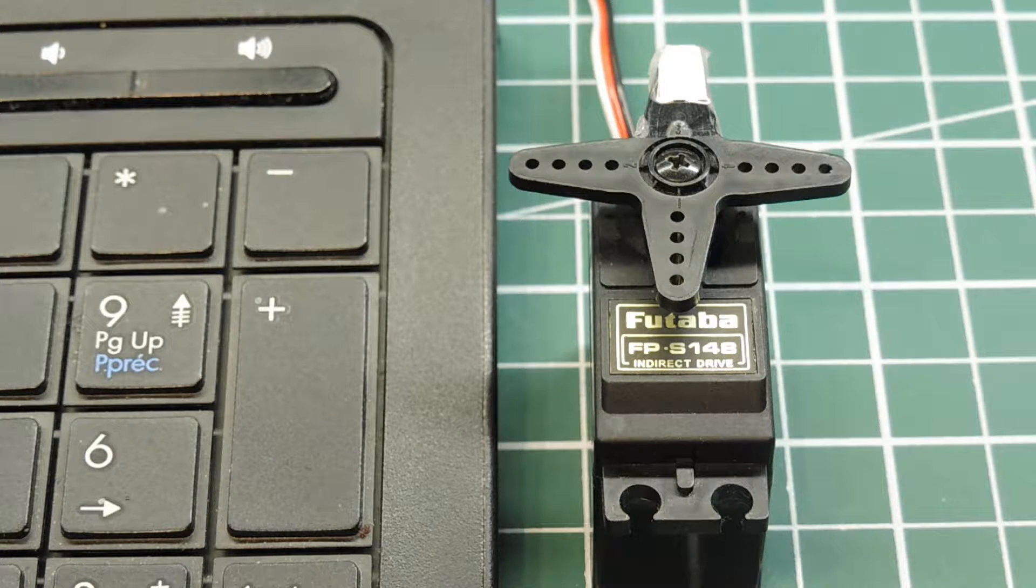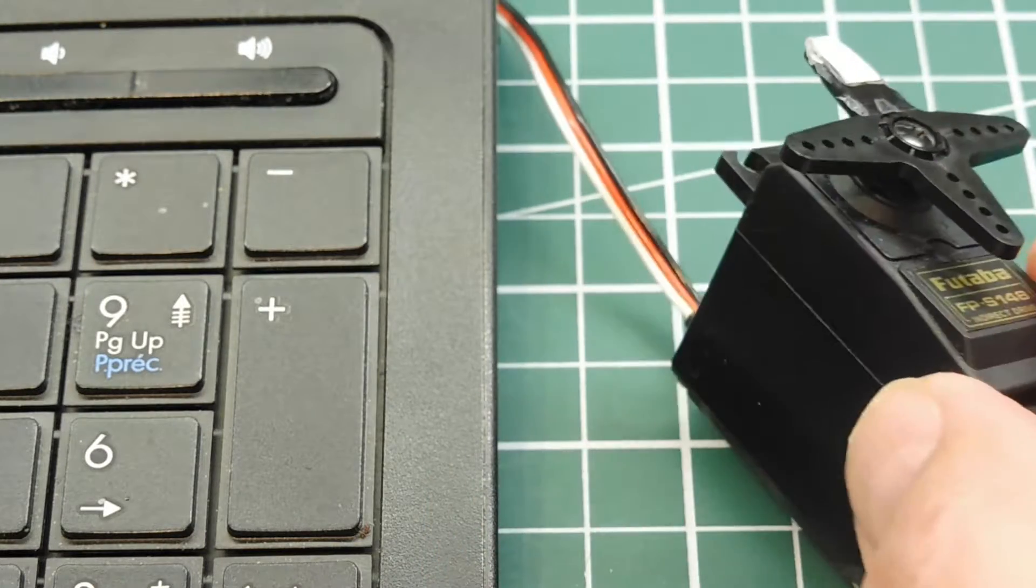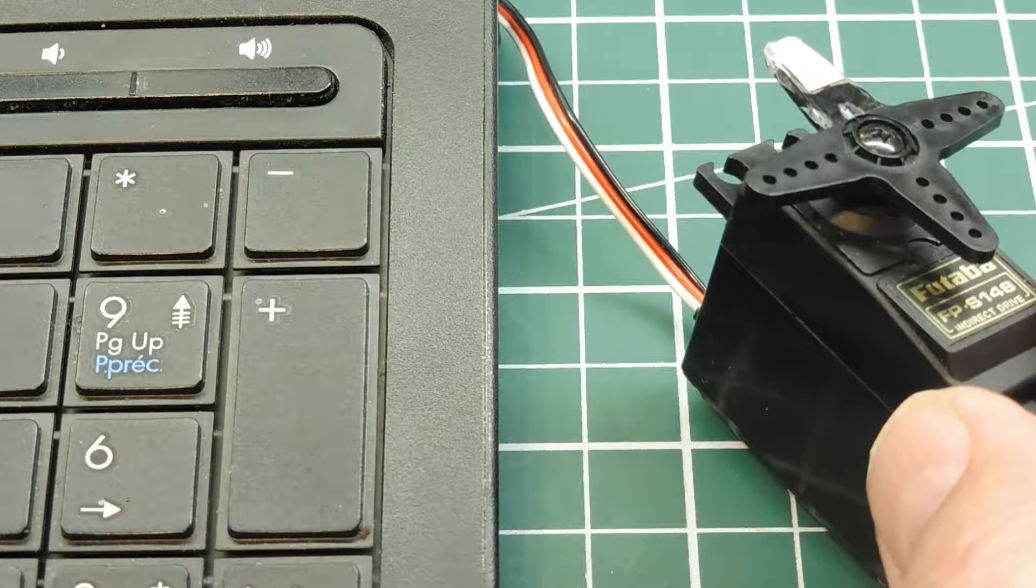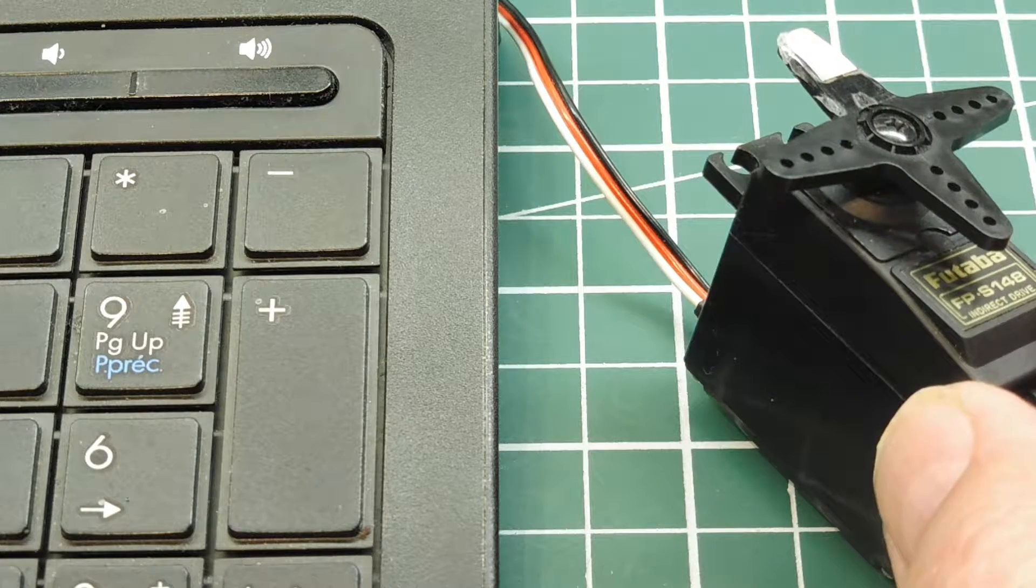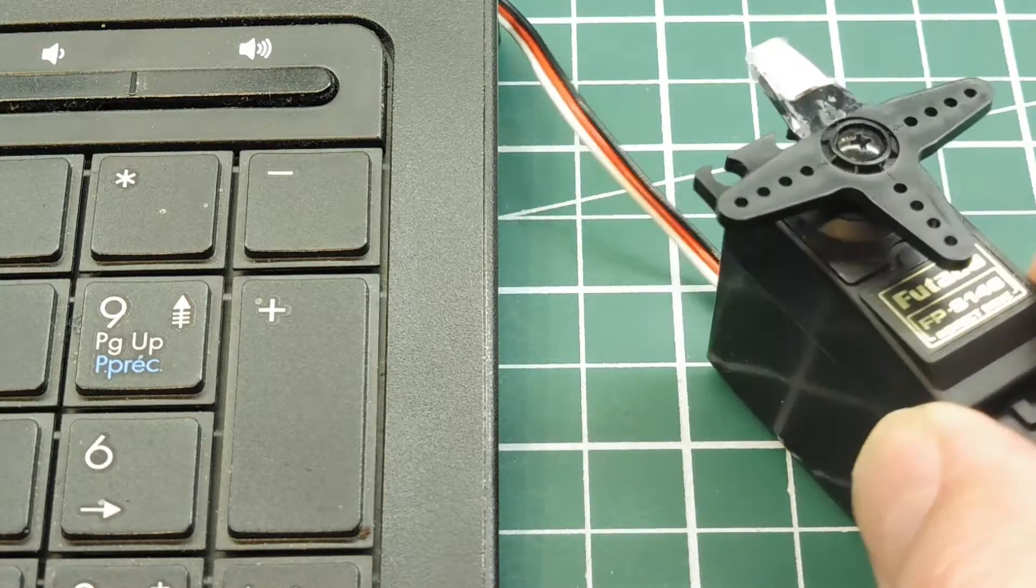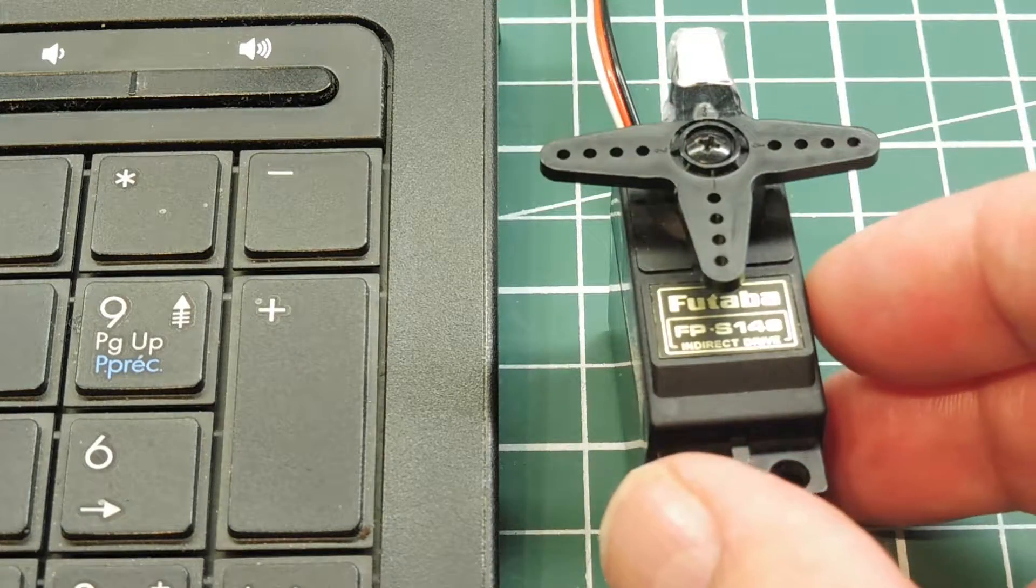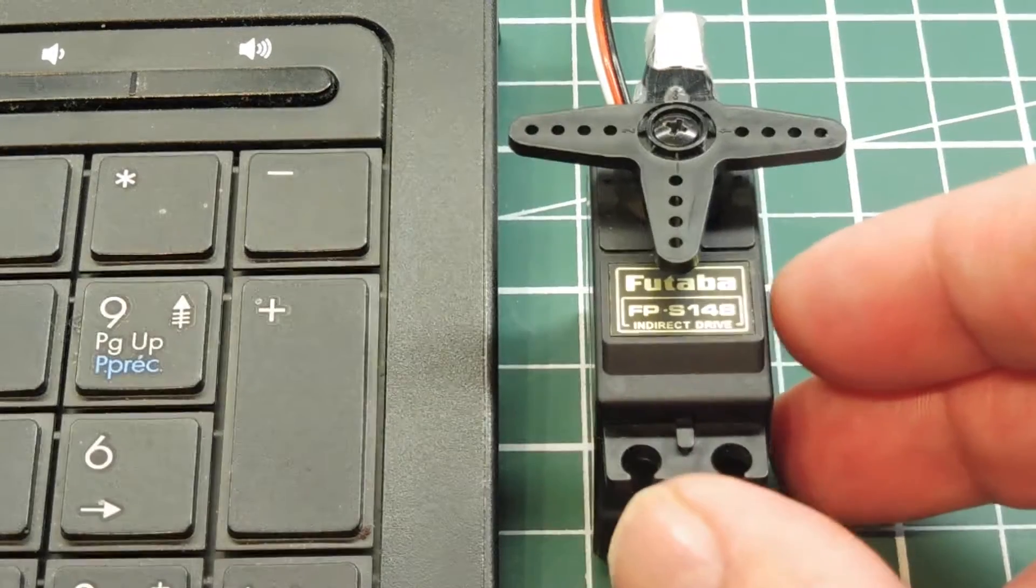So how do we make this servo work? Well, if you look at the cable going into the servo motor, you'll see three wires. There's a black and a red, which is its power. So the red is plus 5 volts, and the black is ground, and the white wire is the control wire. So how do we drive the control wire to make this servo move? That's what we're going to look at in this video.